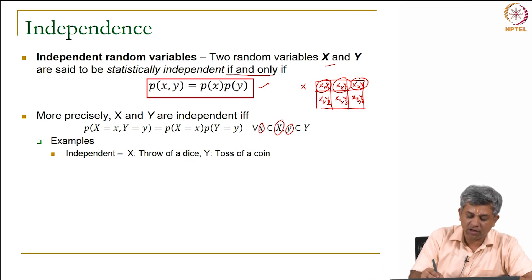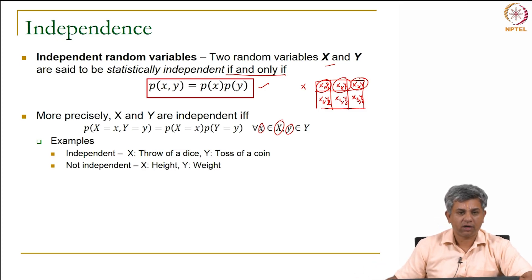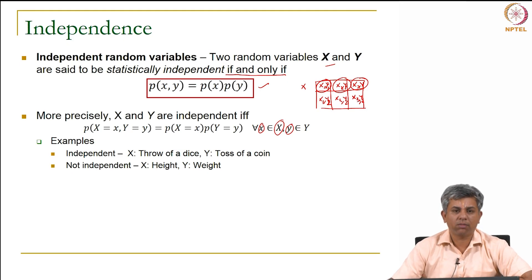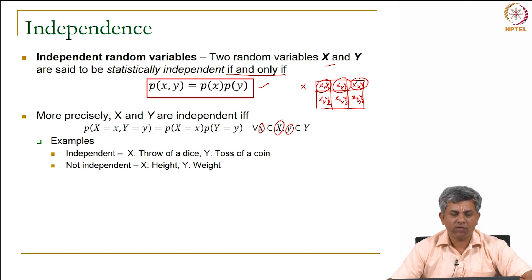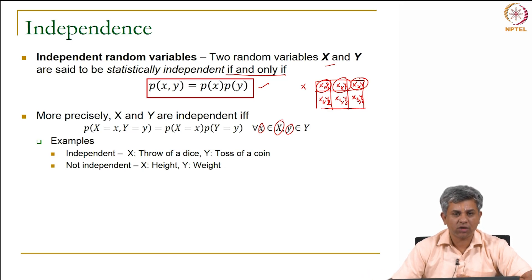Remember this condition is an if and only if condition. If two events are independent then P(X,Y) = P(X) × P(Y), and only if this is true do we consider the two events to be independent. An example of two random variables which are not independent are height and weight — even though you could have a very tall slim person or a short stout person, in general as height increases weight increases, so they are correlated, not independent.